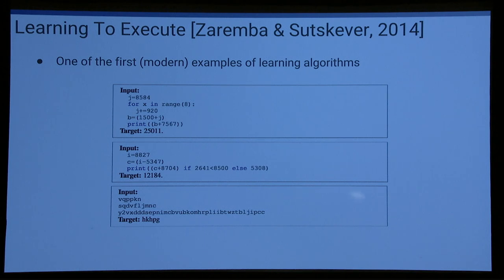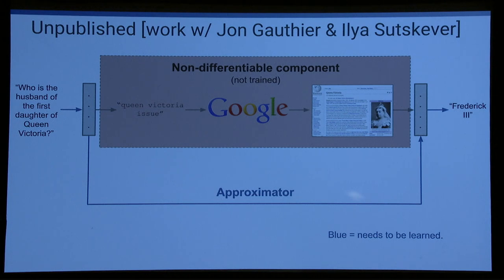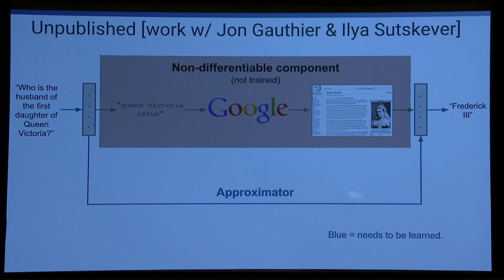This is unpublished work done by an intern in 2015, John Gauthier. What we were trying to do was: can we put Google as a non-differentiable component in a chain of neural networks, sequence-to-sequence and so on, and then try to bypass Google and approximate it with a neural network — essentially linearizing or approximating Google. We didn't quite succeed, but that was the vision we were already pushing forward back in 2015.